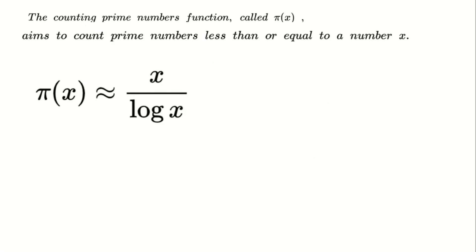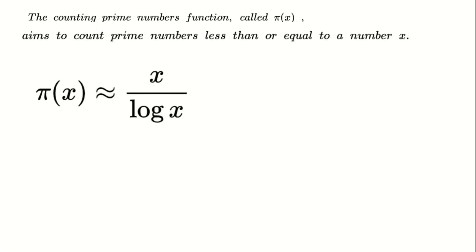For example, let's take the number 11. When we apply the formula, we find that π(11) equals 5, meaning there are five prime numbers less than or equal to 11. Those primes are 2, 3, 5, 7, and 11.